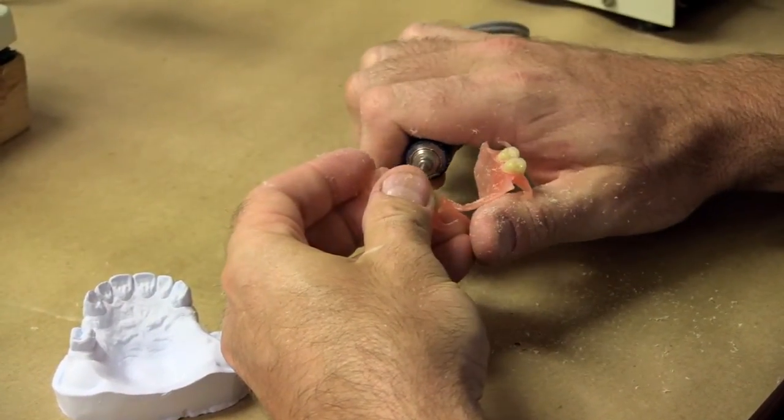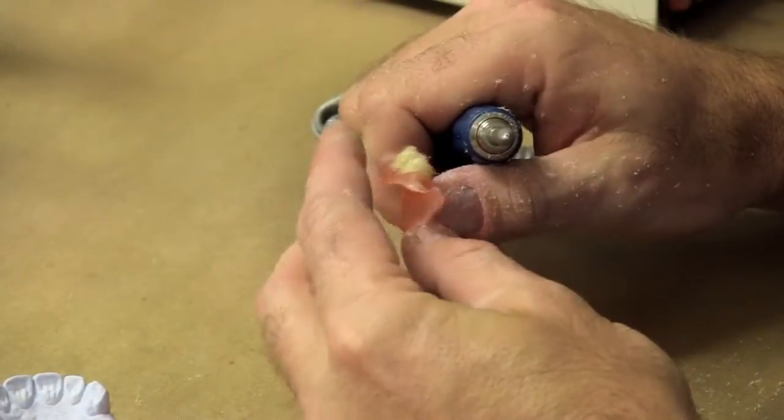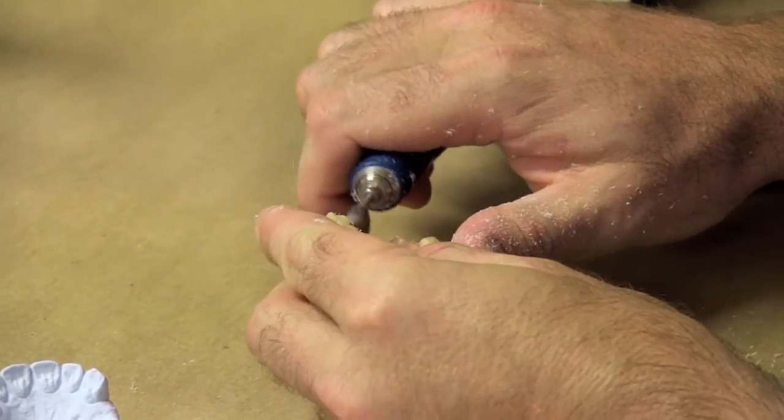As you can see here, Duraflex can be finished with regular carbide burrs. Once you are done finishing, it's now time to polish.